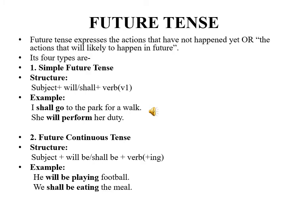Now, the last type of tense is future tense. Future tense expresses the actions that have not happened yet, or the actions that will likely happen in future. Its four types are: first, simple future tense — subject plus will or shall plus verb first form. Example, I shall go to the park for a walk. She will perform her duty.